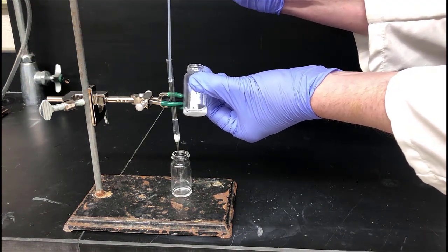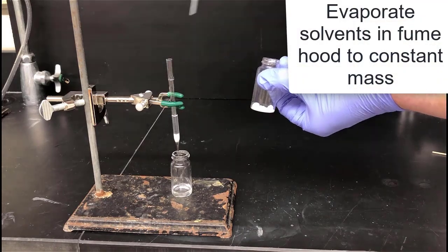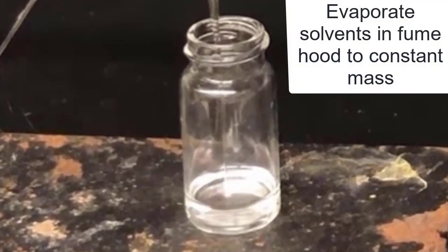When the filtration is complete, we'll need to remove the solvents. Bring the vial over to the fume hood and blow a gentle stream of air into it while you heat it on a sand bath. We'll know that we're done with the evaporation when the vial stops changing in mass. So periodically put it on the balance, weigh it, and see what its mass is. When it stops changing, you'll know you're done.